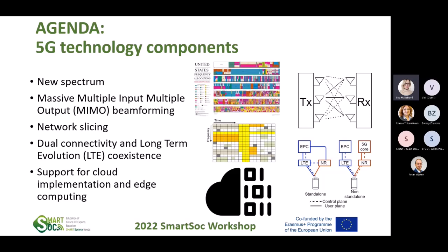I will talk about the new spectrum we need to access for using the fifth generation. All of the existing spectrum is already used by other services, so we have to move them. For example, terrestrial television and other services need to be relocated. It is Massive MIMO — Massive Multiple Input, Multiple Output — and I will talk about that a lot. Network slicing, dual connectivity, and local evolution coexist because we cannot just jump from the fourth to the fifth generation overnight — we must develop slowly.